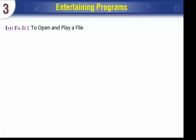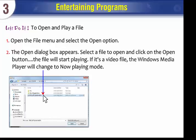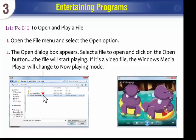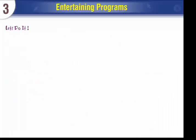To open and play a file, open the File menu and select the Open option. The Open dialog box appears. Select a file to open and click on the Open button. The file will start playing. If it's a video file, Windows Media Player will change to Now Playing Mode. You can also use the Full Screen button.